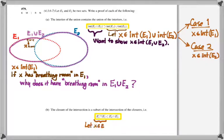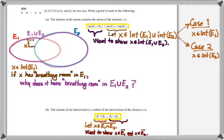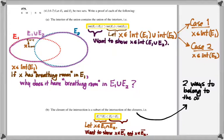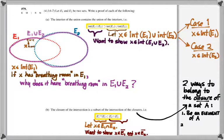For the second problem, the containment goes the other direction. Let X be an element of the closure of E1 intersect E2, and we want to show X is in the closure of E1 and also in the closure of E2. Recall that closure is the union of a set with its accumulation points, so there are two ways an element can belong to the closure of a set: it can be an element of the set, or it can be an accumulation point of the set, which doesn't have to be an element of the set itself. Our proof will need to consider both cases.